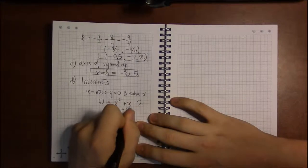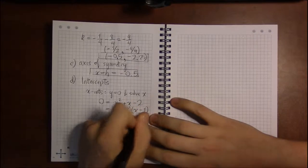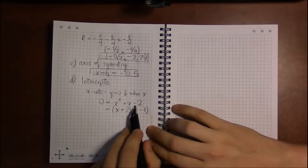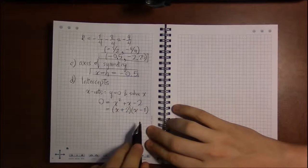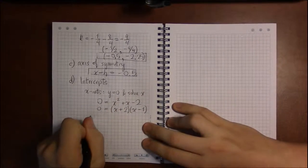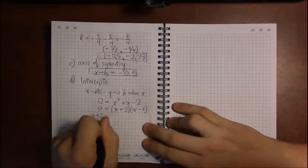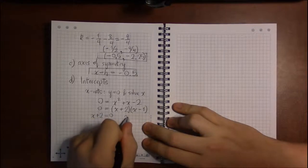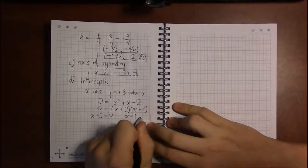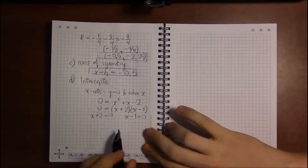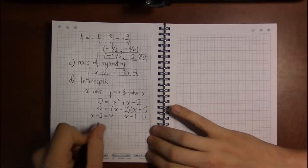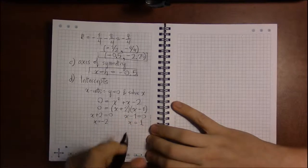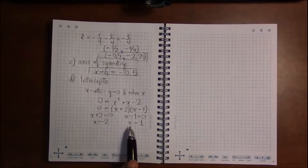It factors as x plus 2 times x minus 1. 2 and minus 1 are two numbers that multiply to minus 2 and add to a plus 1. If you saw that, where you'd go from here is you'd set each thing in parentheses, what we call a factor. You set each factor equal to 0 because you've got a product of two numbers being 0. The only way that can happen is if one of these two numbers is 0. But I'm going to assume, just for completeness, that you didn't see that.